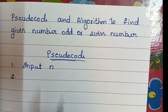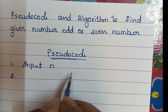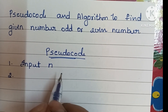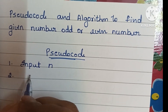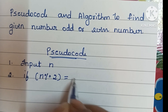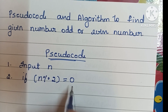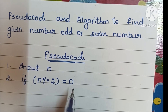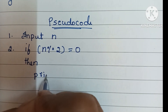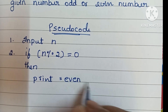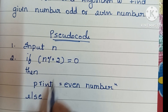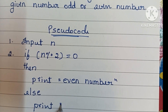To determine odd or even, we have to divide n by 2. If the given number is completely divisible by 2, then it is an even number; otherwise it is odd. So we write: if n modulo 2 is equal to 0, it means the remainder is equal to 0. If this condition is true, the number is even. If this condition is not true, the given number is odd, so we print odd number.